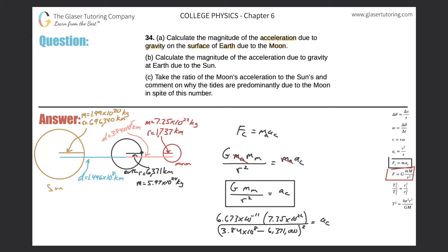So all you have to do is throw it into the calculator. We have 6.673 times 10 to the minus 11, times 7.35 times 10 to the 22nd, divided by the quantity 3.84 times 10 to the 8 minus 6,371,000, close parentheses, squared. Here we get a value of a_c equal to 3.44 times 10 to the negative 5 meters per second squared. This is the centripetal acceleration that this object on Earth's surface experiences due to the Moon.